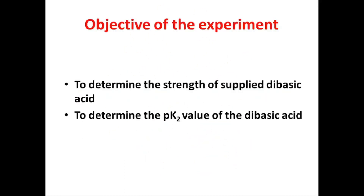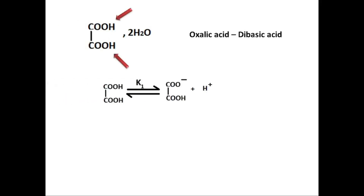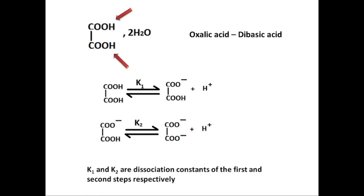The objective of this experiment is to determine the strength of the supplied dibasic acid solution, as well as to determine the pK2 value of the dibasic acid. Oxalic acid is a dibasic acid because it has two replaceable hydrogen atoms, and it dissociates in two steps. Here, K1 and K2 are the dissociation constants of the first and second steps respectively. When we titrate oxalic acid against NaOH, we should get two equivalence points.